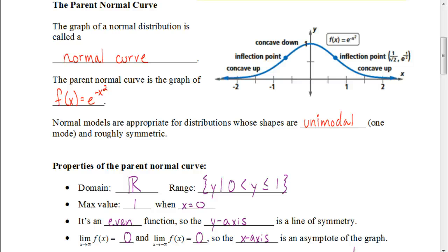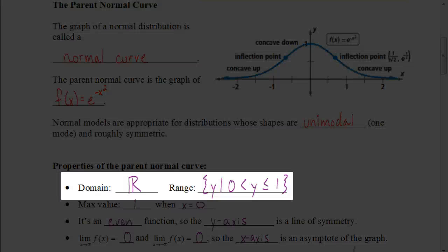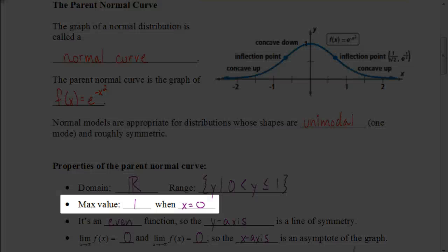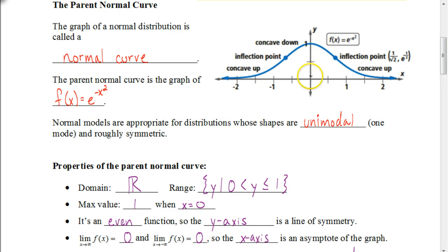What are some properties? The domain of this function is all real numbers, and the range is greater than zero and less than or equal to one. The maximum value is always going to be one, and that's going to occur when x is zero. So in the middle, when x is zero, our maximum value would be one.